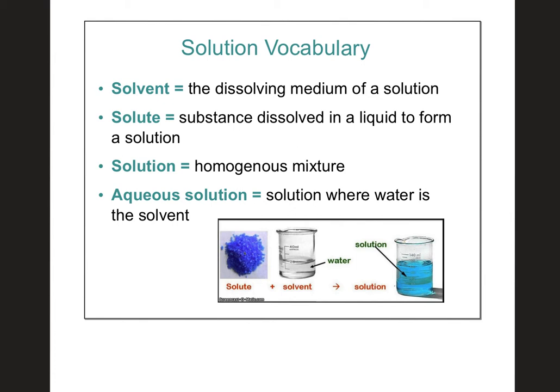A solution is a homogeneous mixture. That means we have two different types of particles — the solid particles and the water particles. They are not bonded together, but they are evenly mixed; that's what homogeneous means. An aqueous solution is a very specific solution where the solvent must be water.